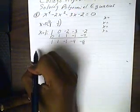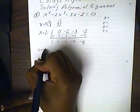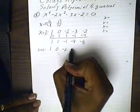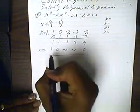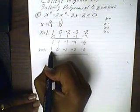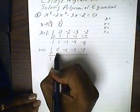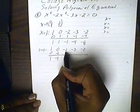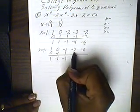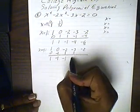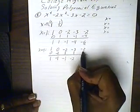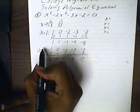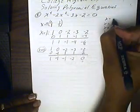Let's try x equals negative one. We'll put our coefficients back: one, zero, negative two, negative three, two. Testing negative one: start with zero. One added to zero is one; one times negative one is negative one. Zero added to negative one is negative one; negative one times negative one is positive one. Negative two added to one is negative one; negative one times negative one is positive one. Negative three added to positive one is negative two; negative two times negative one is two. Negative two added to two is zero. Since we have a zero remainder, the remainder theorem says this is a solution — x equals negative one.